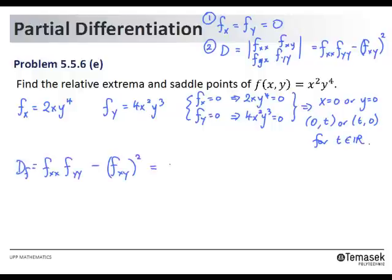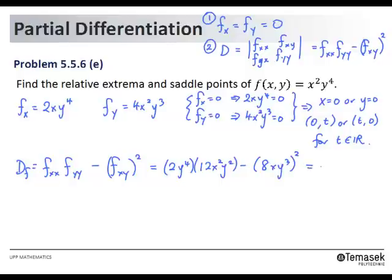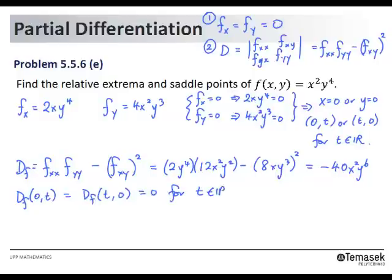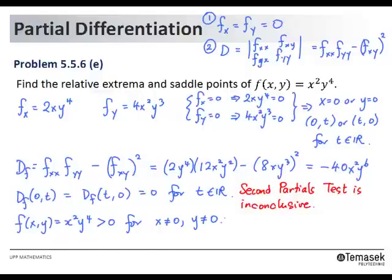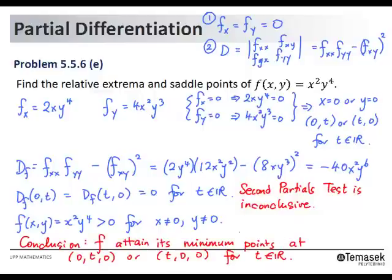Next, to find d: we compute 2y⁴ times 12x²y² minus (8xy³)², which gives negative 40x²y⁶ after simplifying. Notice that the discriminant at the critical points is zero, so the second partial test is inconclusive. However, we notice that f(x, y) is positive for all x and y non-zero. Therefore, we conclude that all the critical points found are actually minimum points.